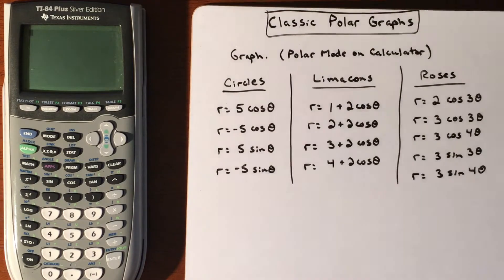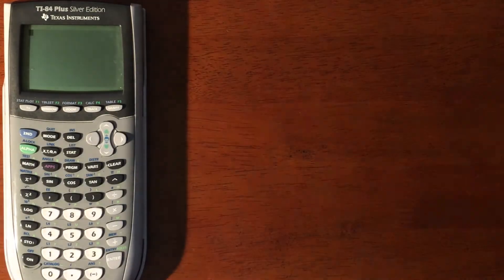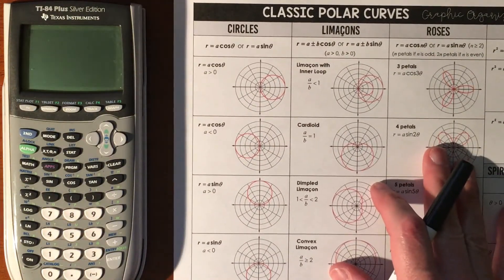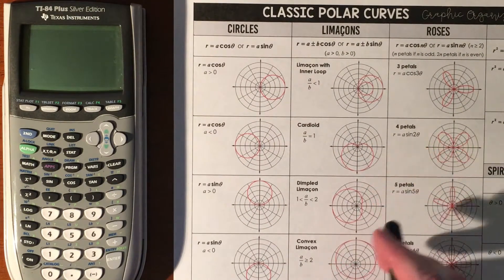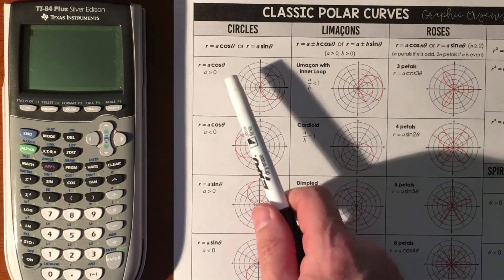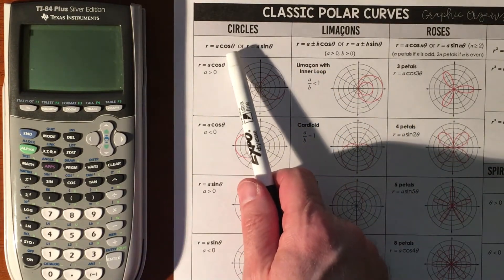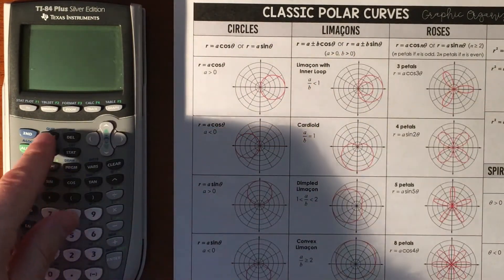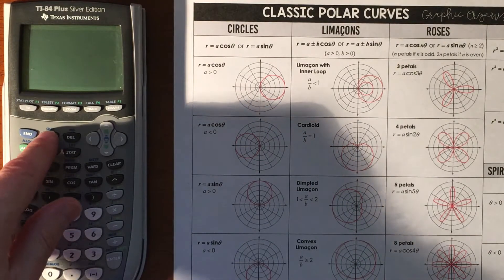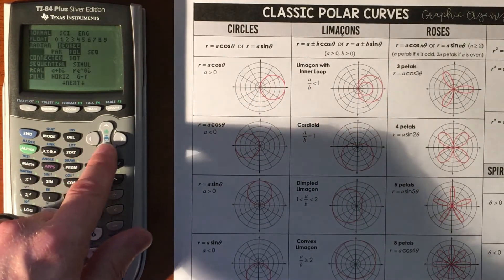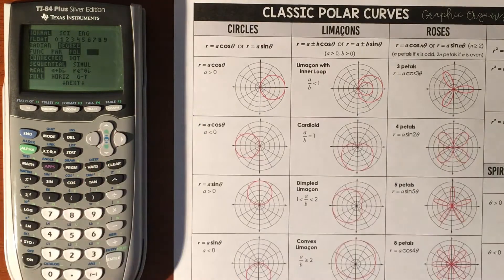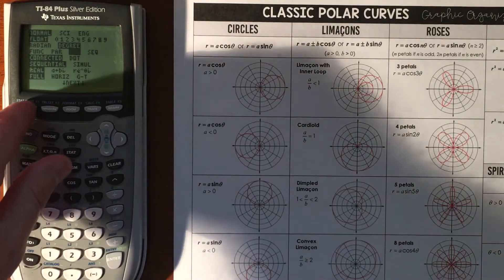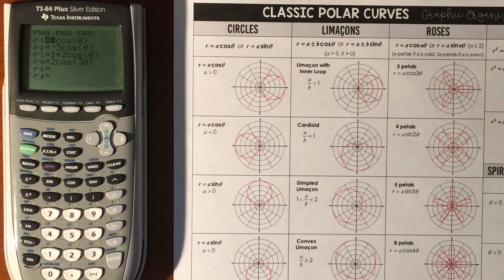So at some point I'm going to be typing in all of these different types of equations. We have circles, and circles happen when you basically just have a number times cosine. First, make sure you're in the right mode - not in function, but in polar. If it's not highlighted, press enter. When you go into your Y equals, you're going to see that it's not a Y equals anymore - it's an R equals.